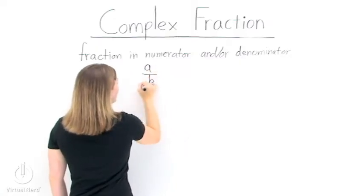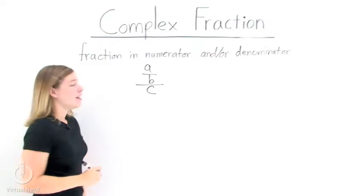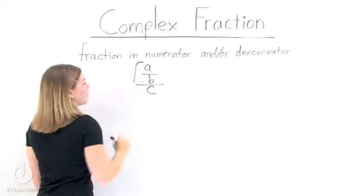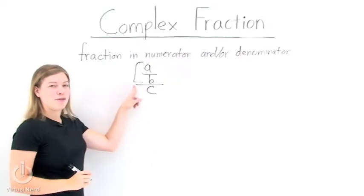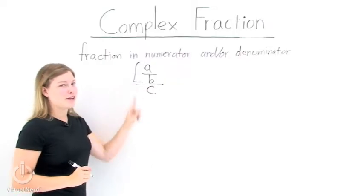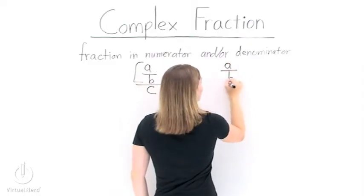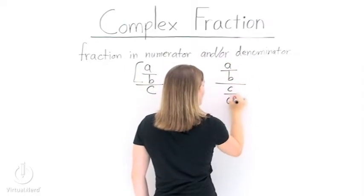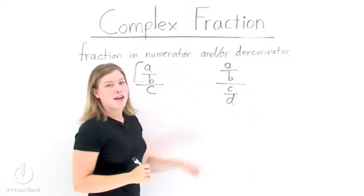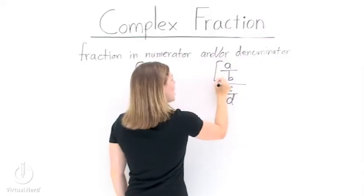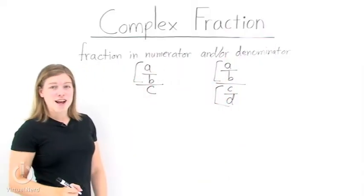Take a over b divided by c. This is a complex fraction. It has a fraction in the numerator, a over b. We know this because there's a fraction bar right here. The main fraction bar is a little bit bigger than the others. If we want to look at a complex fraction where we have a fraction in the numerator and the denominator, it would look something like this: a over b divided by c over d. a over b is the fraction in the numerator and c over d is the fraction in the denominator.